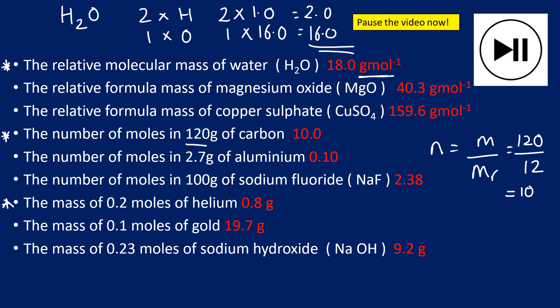Moving on to the mass of 0.2 moles of helium: using the same formula triangle but rearranged, mass equals moles multiplied by relative mass. My moles is 0.2 and the relative mass of helium is 4, so 0.2 times 4 equals 0.8 grams. Units are essential here because it's mass — the units are in grams.